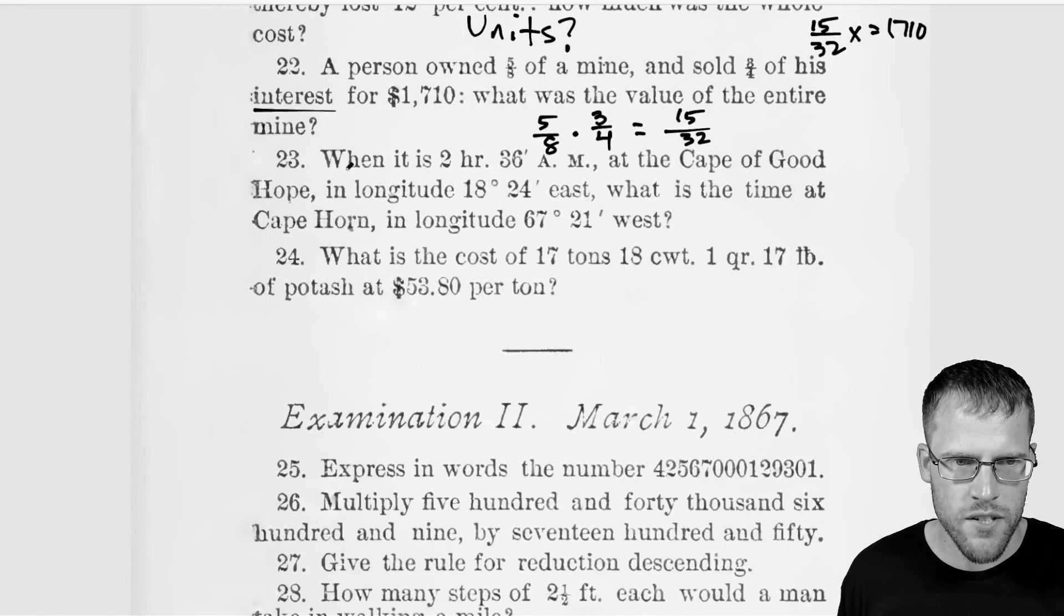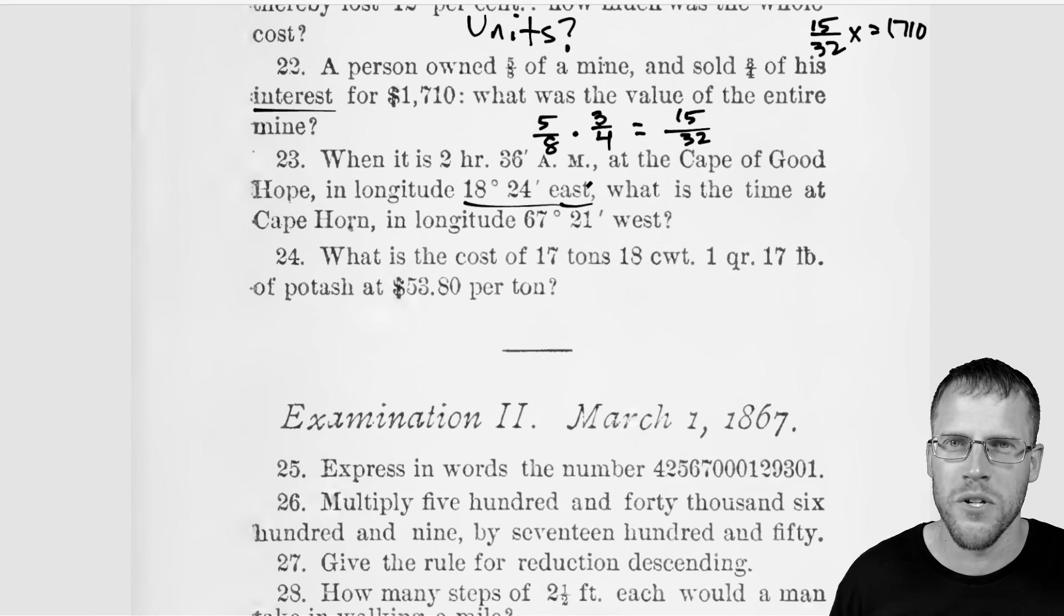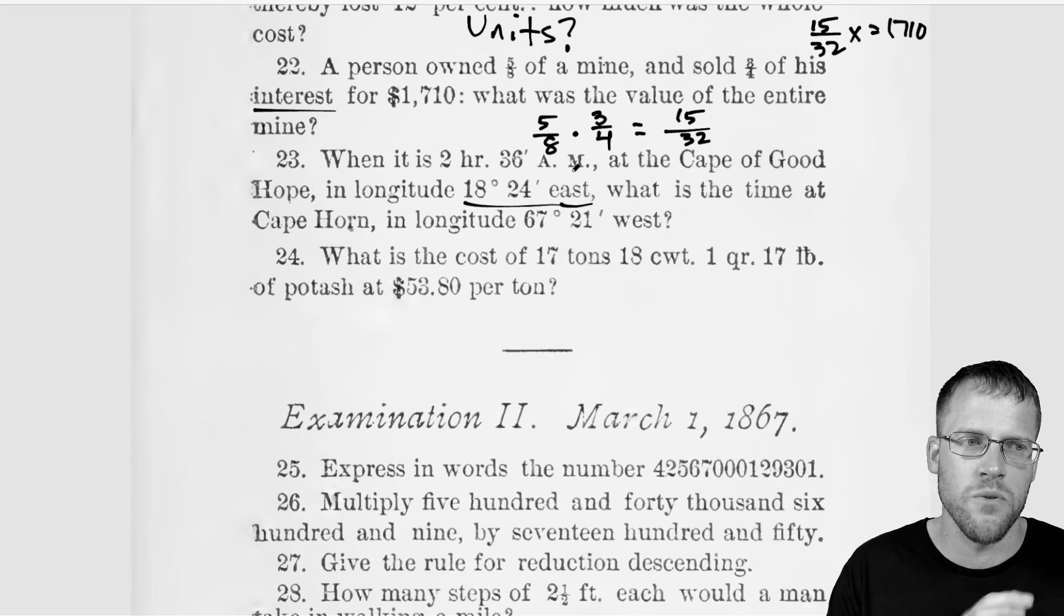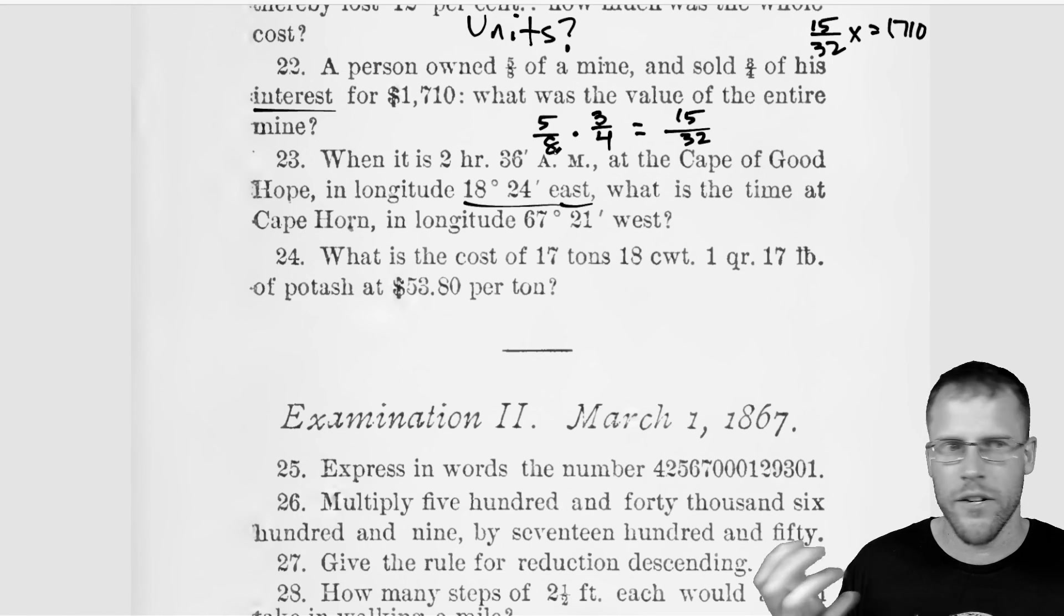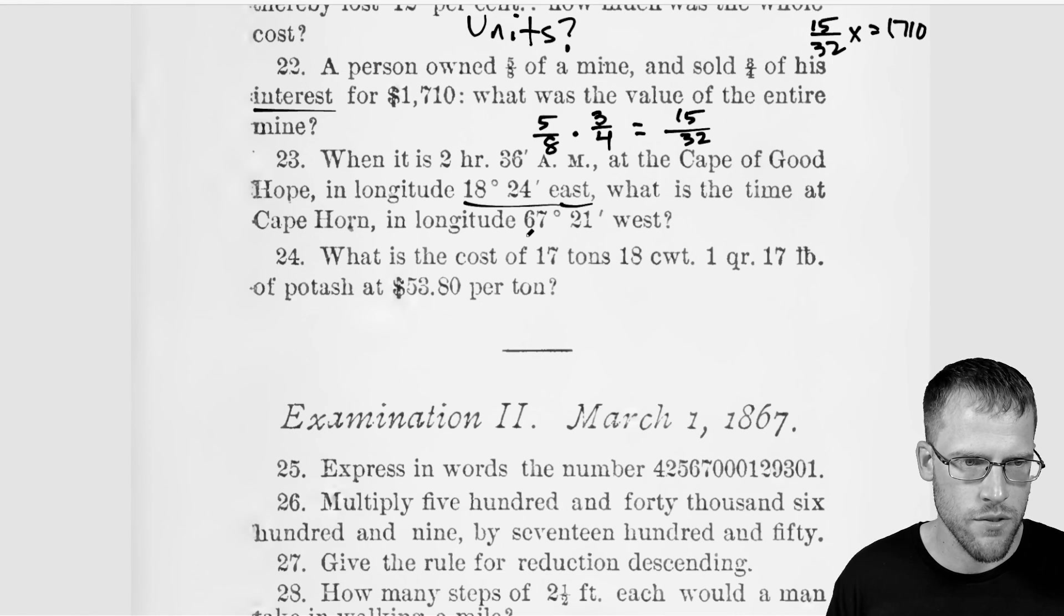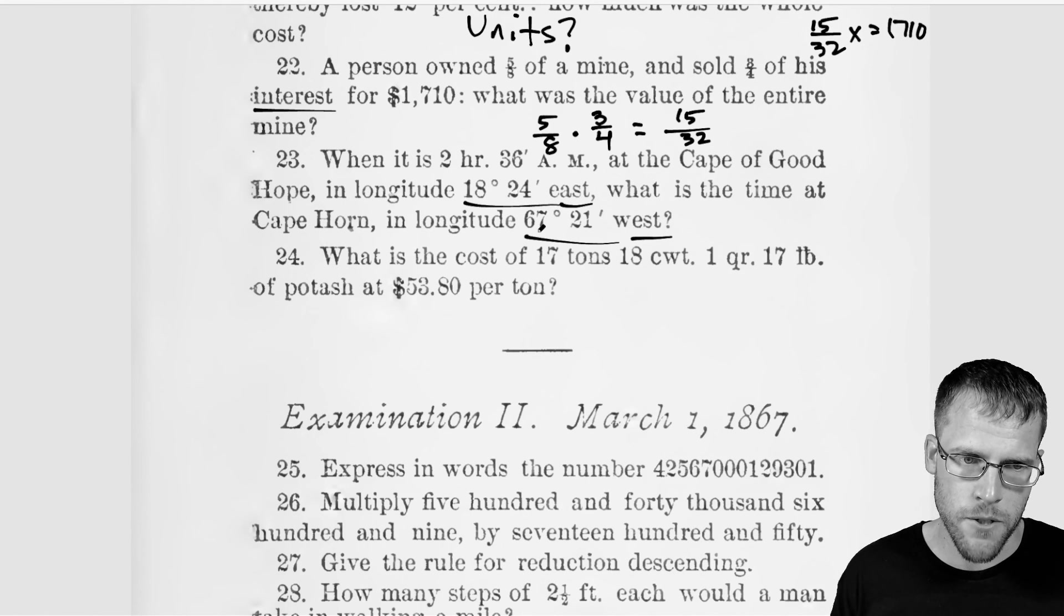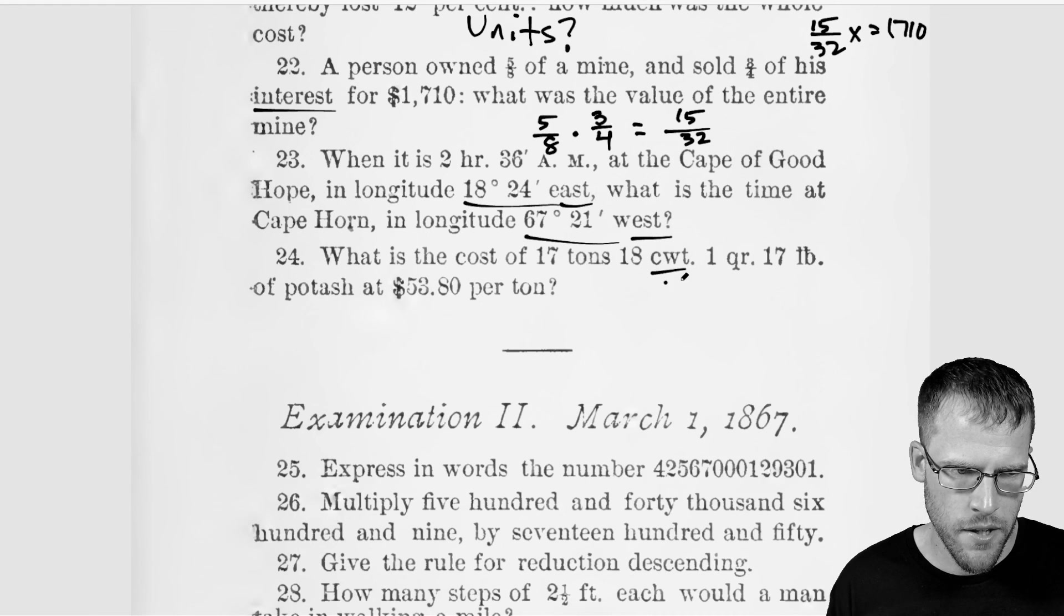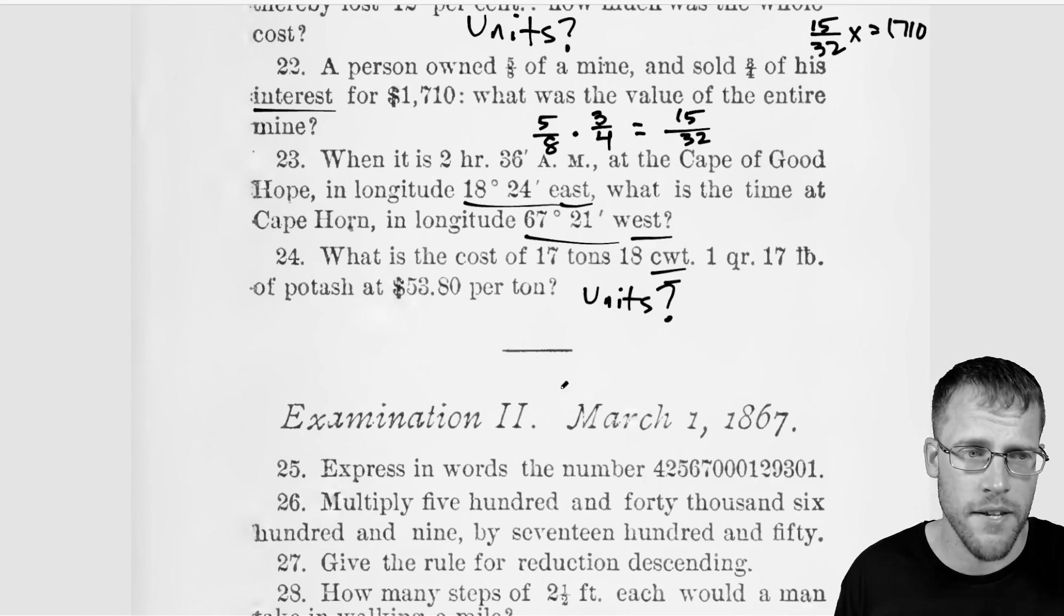All right. Next up here when it's 2:36 AM at the Cape of good hope in longitude. All right. So this is globe stuff that I'm not too familiar with. I would have to brush up for sure, but it's time zones plus globes. You have to know, I guess, which time zone you're in and then add or subtract however many hours and minutes you're ahead or behind at Cape Horn in longitude. Yeah. So I would have to brush up on this. I don't know. And I don't know the time zones by heart. So yeah, this question, I'm just not too sure. What is the cost of 17 tons? Yup. There's the units again. Don't know the units for this. But unit conversion seems to be a massive idea.